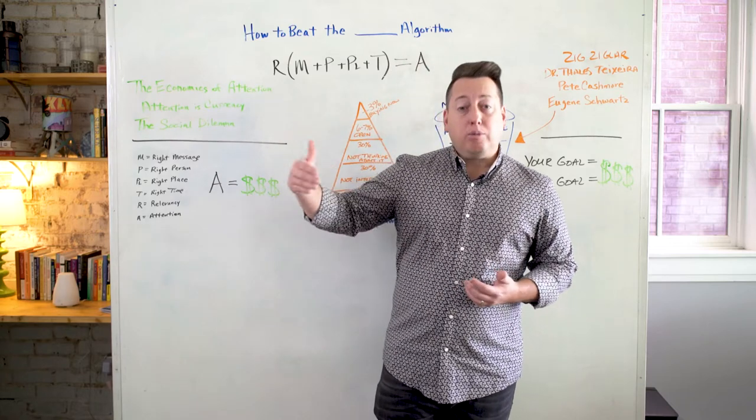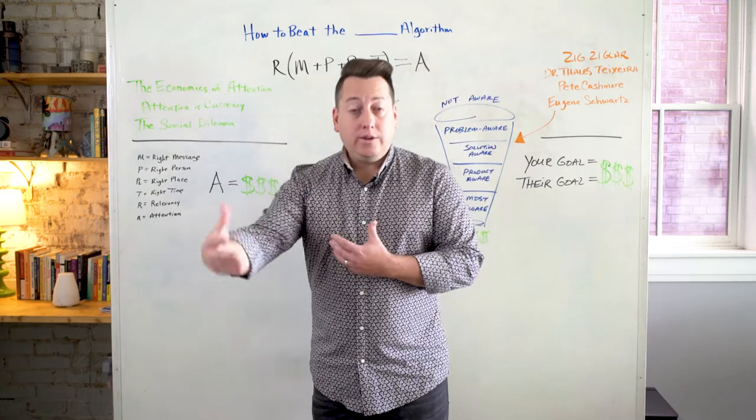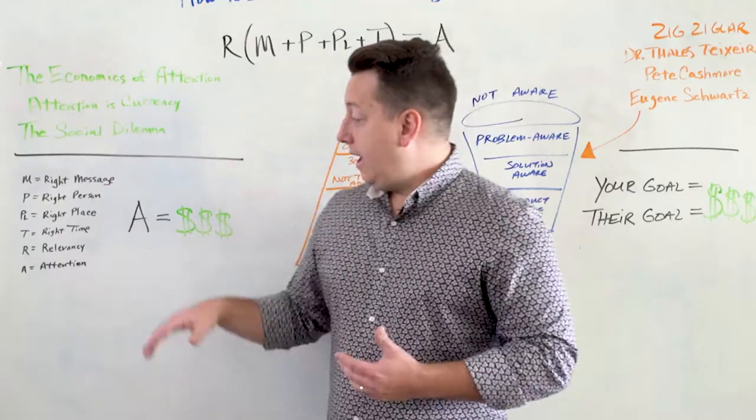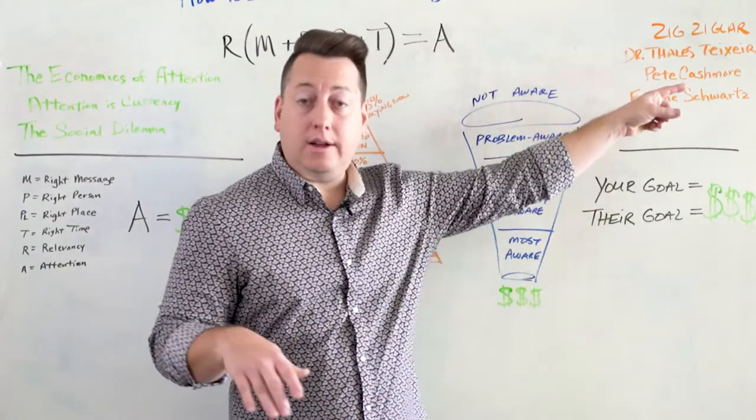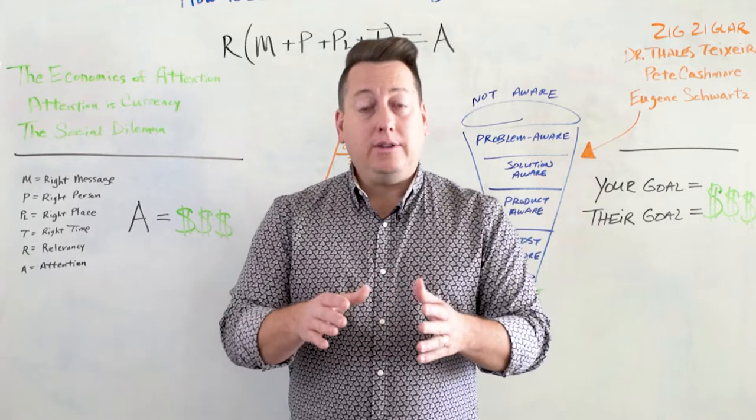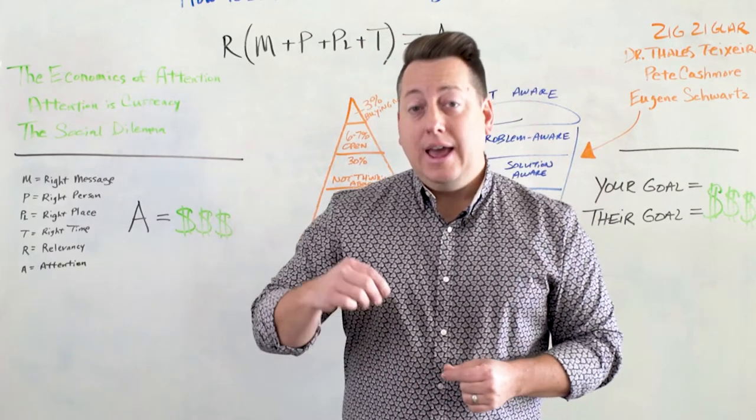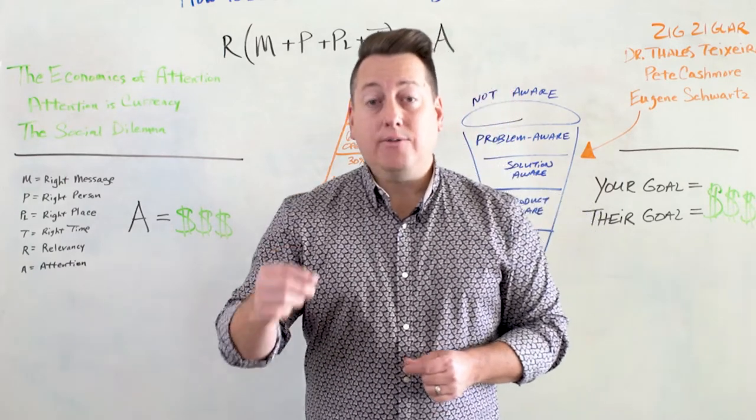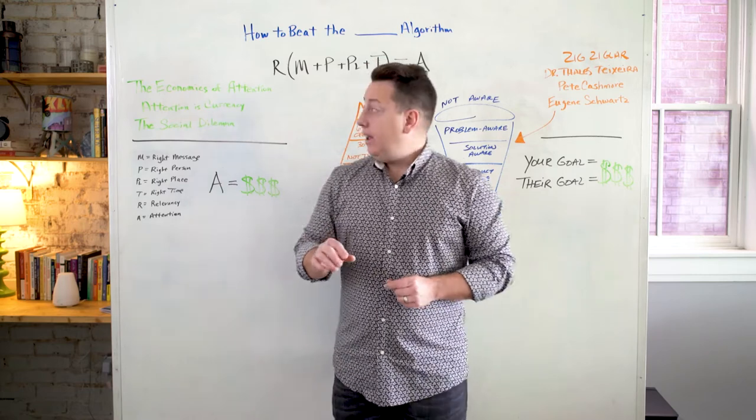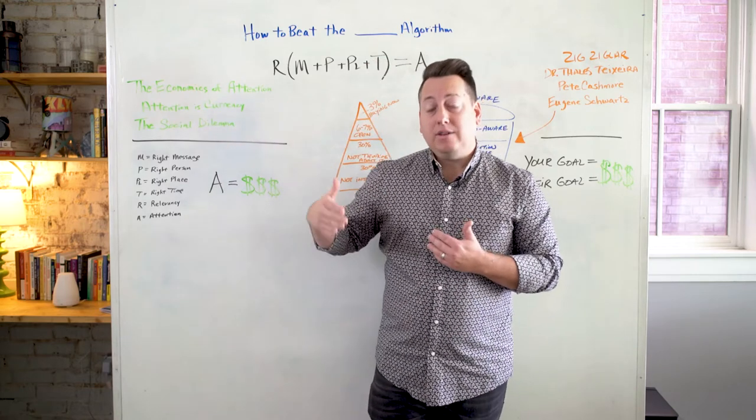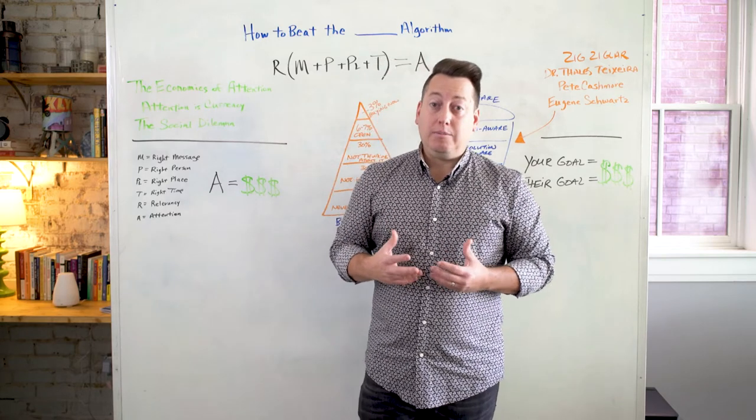So attention is how brands like Google and Facebook and Twitter, it's how they drive revenue. It's how they can increase the price of their views and impressions. It's how they can increase the advertising that they charge. And this is important because as Dr. Thales Textura, a professor at the Harvard Business School, said that attention has increased over the last 20 years, seven to ninefold, the value of attention, seven to ninefold. In his study on the economics of attention, he really outlines how attention is the new currency, like Pete Cashmore says.